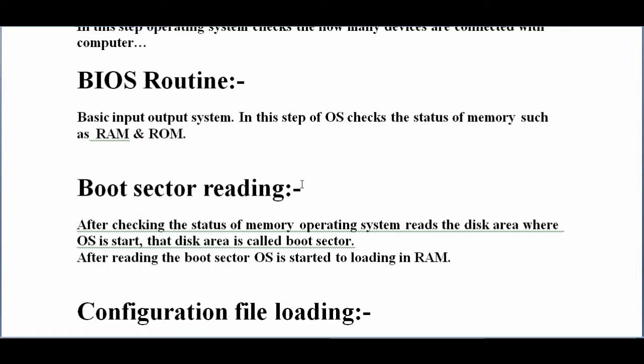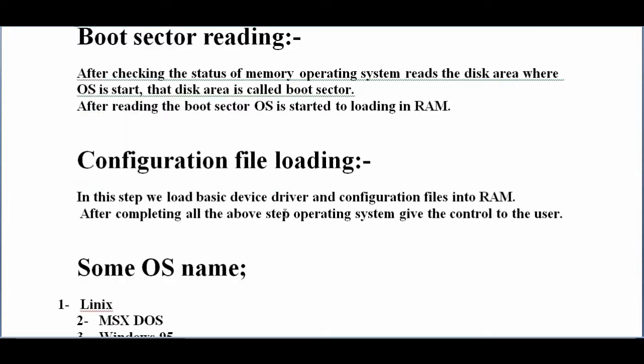Boot sector reading — in this process, the operating system reads the hard disk area where the operating system is installed, and that disk area is called the boot sector. After reading the boot sector, the operating system starts to load into RAM. Another step is configuration file loading. In this step, the operating system basically loads basic device drivers and configuration files into RAM memory.